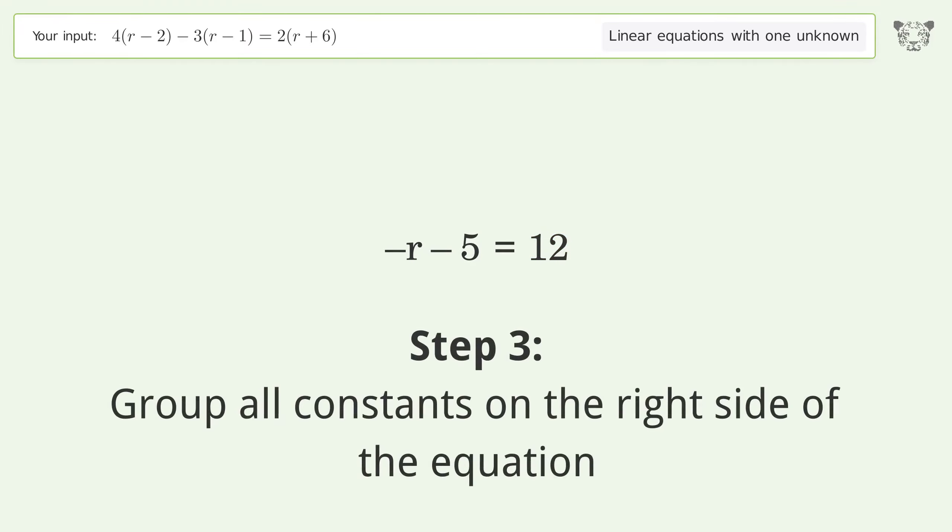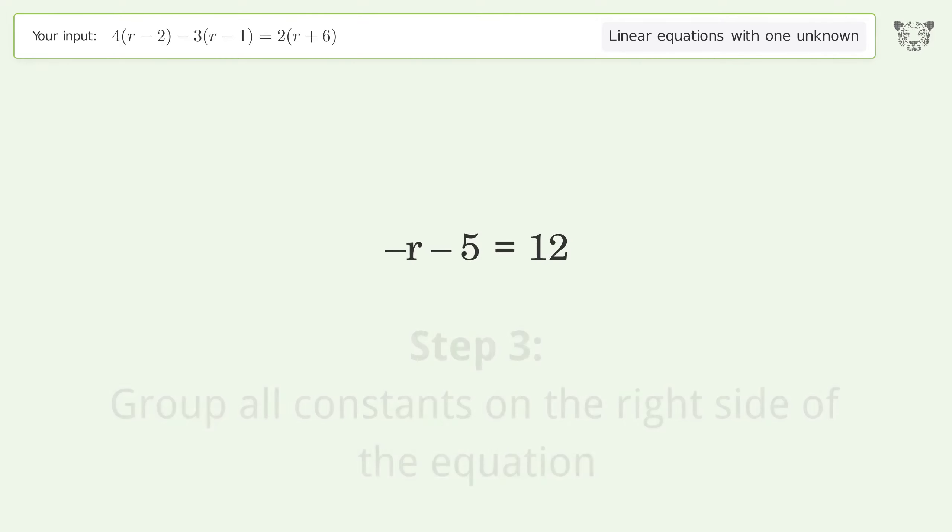Group all constants on the right side of the equation. Add 5 to both sides. Simplify the arithmetic.